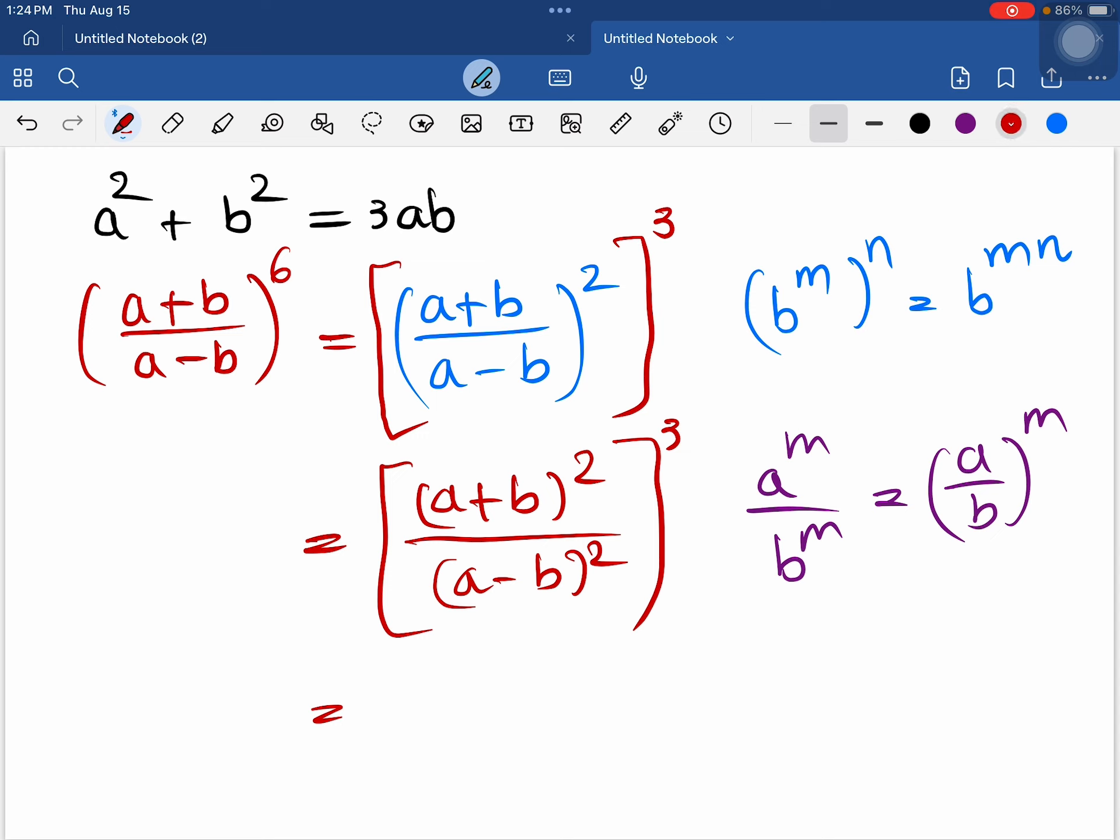We can expand a plus b the whole square as a squared plus 2ab plus b squared, divided by a minus b the whole square as a squared minus 2ab plus b squared, the whole power raised to 3.